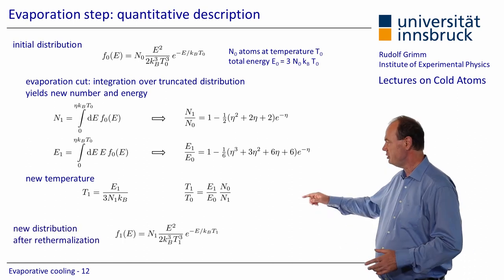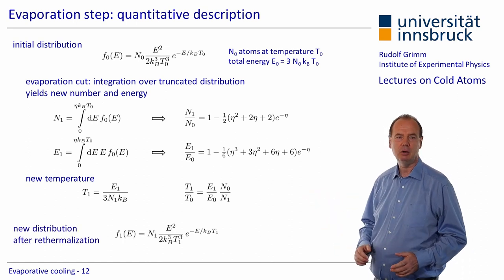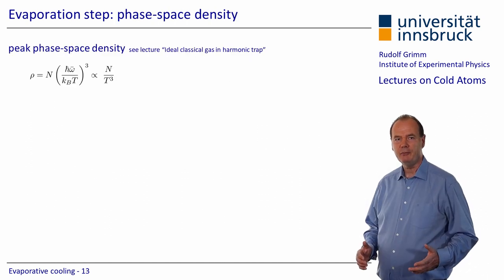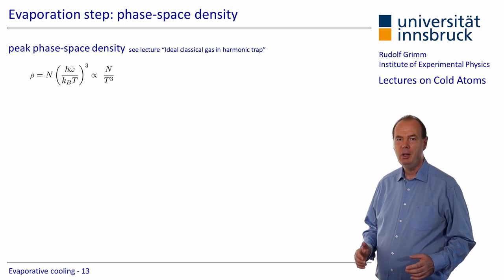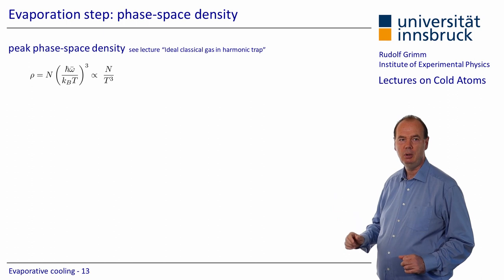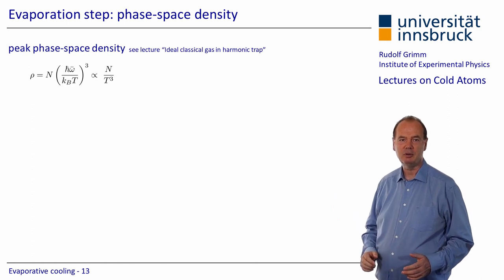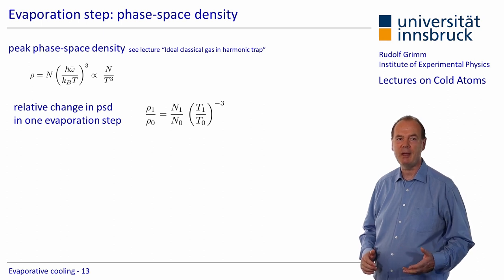Now we know the new thermal distribution, which we have already seen on the slide before. What does it mean for the phase space density? Recall the expression for the peak phase space density from an earlier lecture. In a harmonic trap, it scales as N over T cubed. And now it is straightforward to calculate the relative change in phase space density that we obtain in one evaporation step.